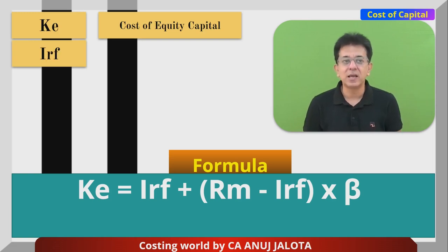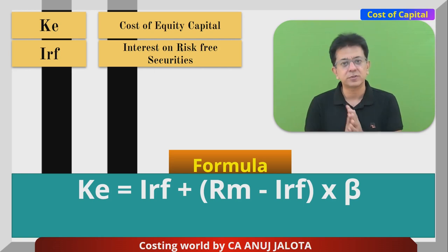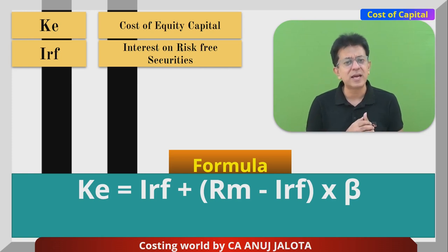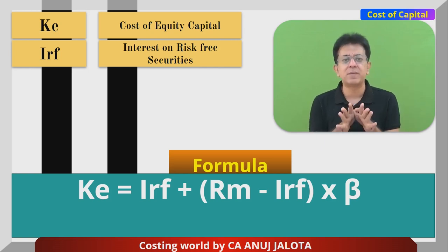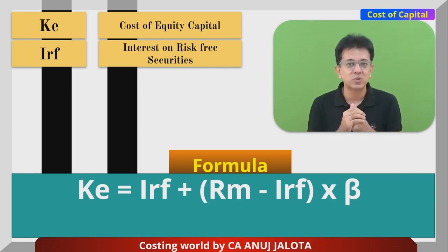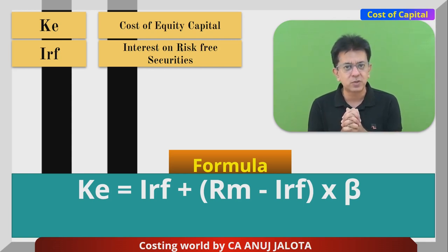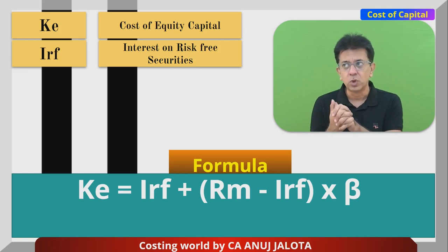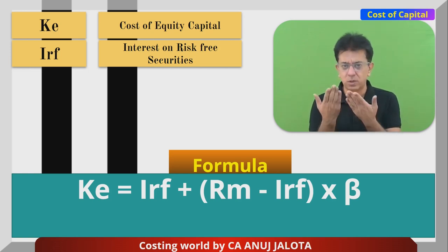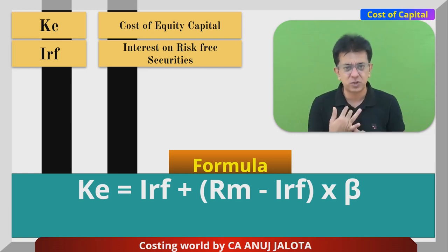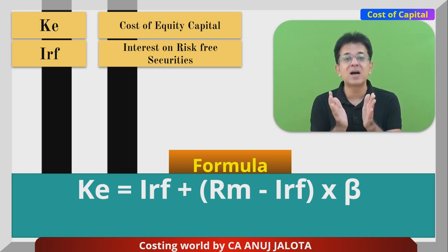Irf is the interest on risk-free securities — for example, Government of India bonds or power sector bonds, where there is absolutely no risk. Suppose Irf is 10%, meaning you can get 10% anywhere without taking any risk. So why would you buy TCS shares? Because you want something more. You go to the stock exchange and buy through a demat account via platforms like Zerodha or HDFC Securities.